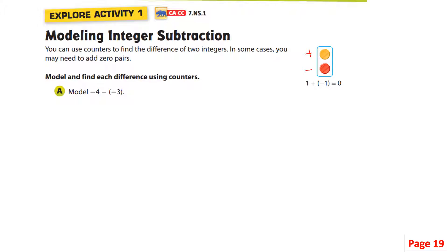The minus right here is the operation, and this here is the sign. The parentheses in between separates the operation and the sign. That's why you have parentheses there — it's not that there's actually something to do inside the parentheses.